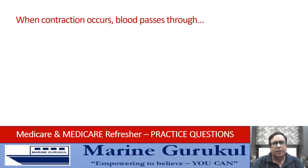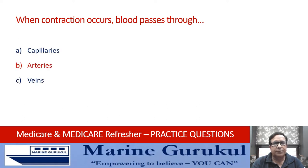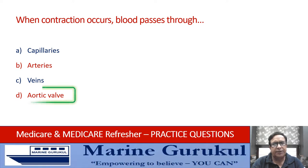When contraction occurs, blood passes through: capillaries, arteries, veins, or aortic valve. The answer is D — the aortic valve.